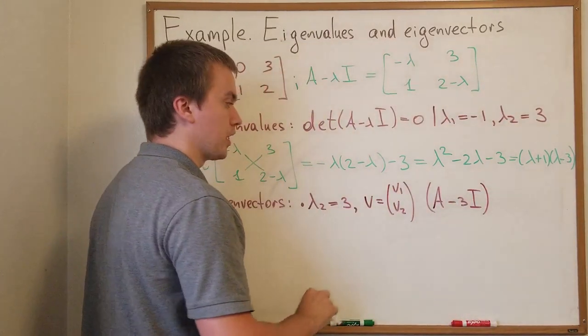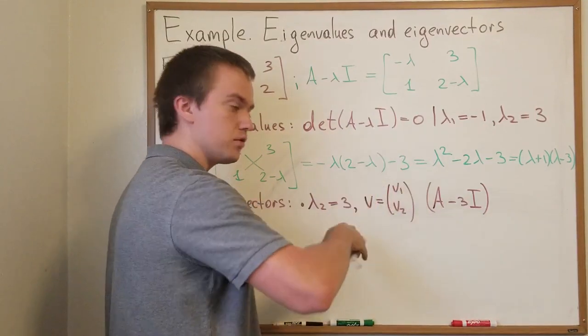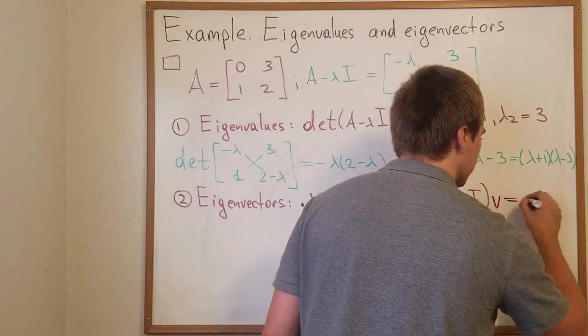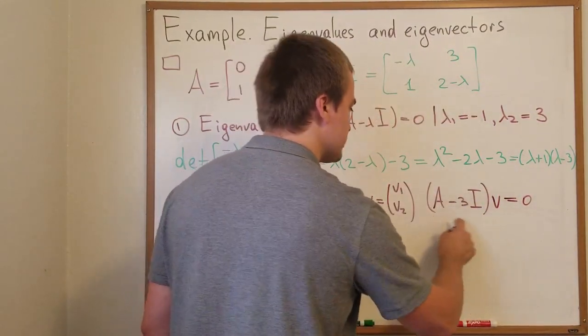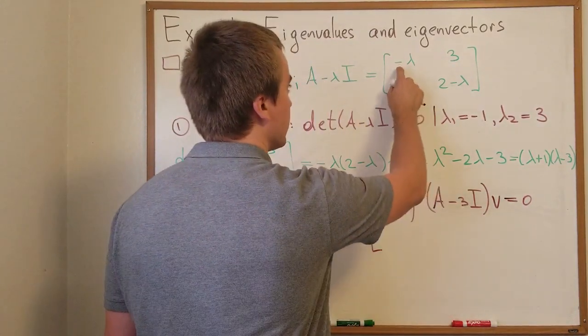A minus 3I. And since we want to find when v lies inside the nullity I will just need to write my A minus 3I times v equals to 0. But what is this matrix? This matrix is exactly negative 3, 3.